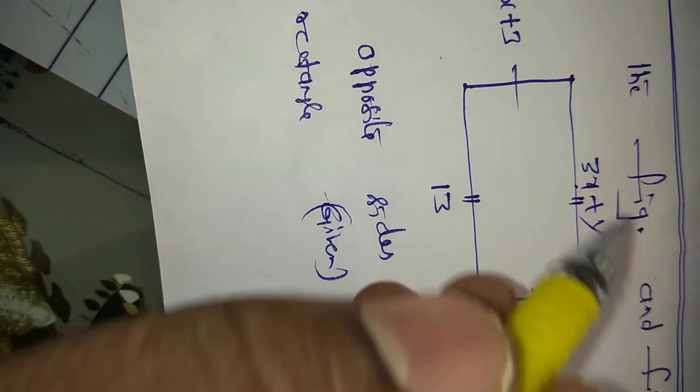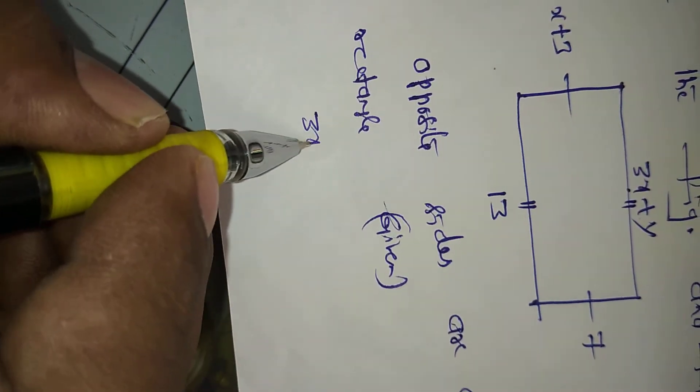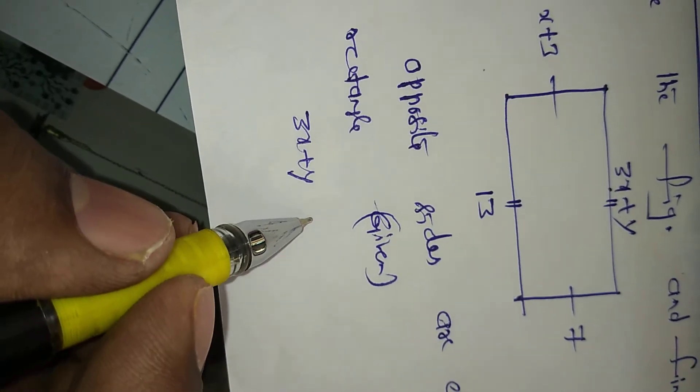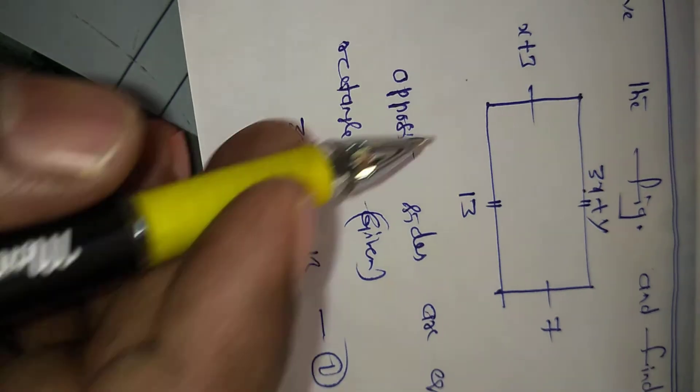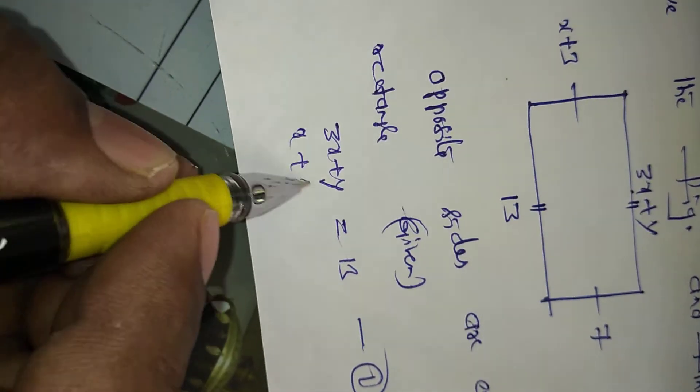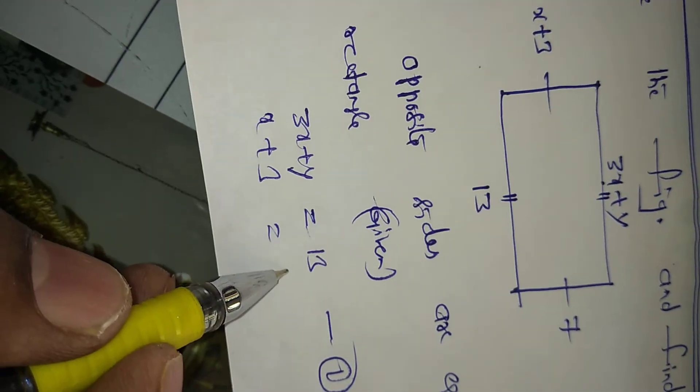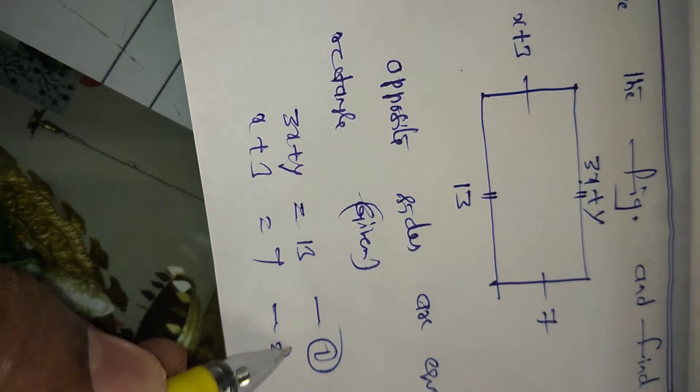Now opposite sides: here 3x plus y, which is length, equals 13, which is equation number 1. x plus 3 equals 7, breadths are equal, equation number 2.